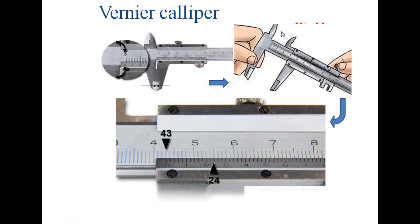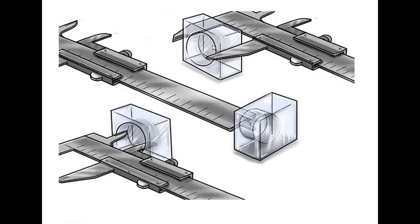Here is an example of reading a vernier caliper. The main scale reads 43 mm, and on the vernier scale the 12th division coincides with the main scale division. The total reading is 43 + 0.24 = 43.24 mm. The vernier caliper can be used for external measurement, internal dimension measurement, and depth measurement.